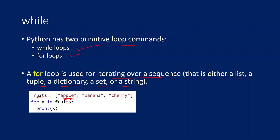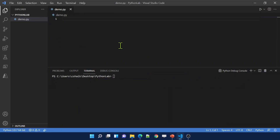Looking at this example, we have a variable called fruits which contains a list — apple, banana, and cherries. Using the for statement we are looping through the fruits variable, that means the complete list, and printing each item. This is how you use for loops basically. Let me practically show you this in Visual Studio Code.